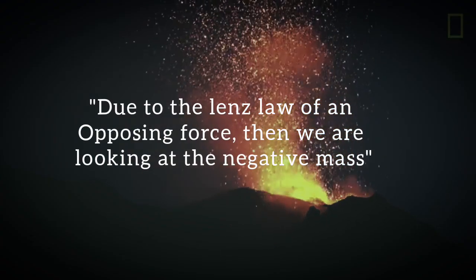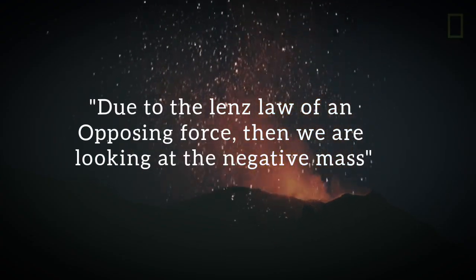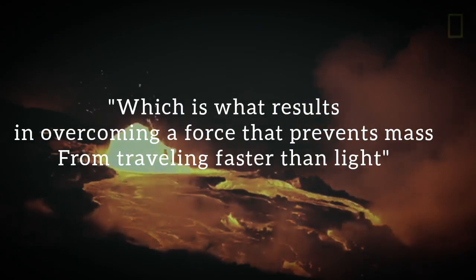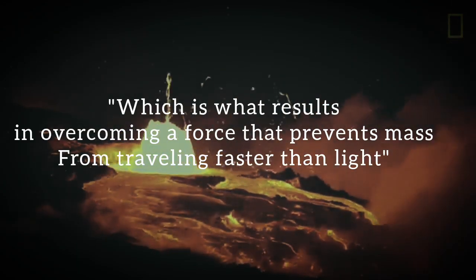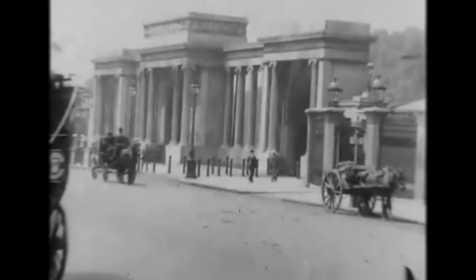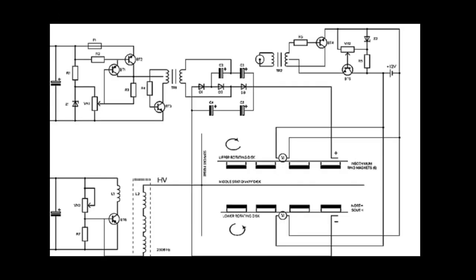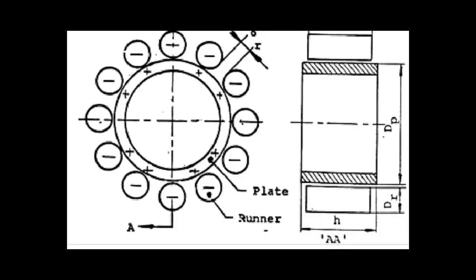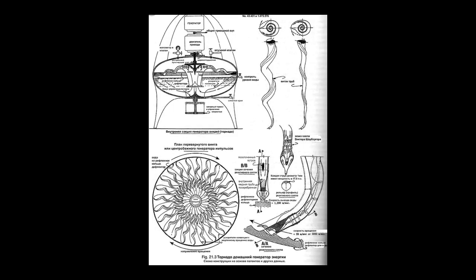Due to the Lenz's law of an opposing force, we're looking at negative mass, which is what results in overcoming a force that prevents mass from traveling faster than light. What you're looking at is the Alexis Gravifier, Graviticus platform, Sulfate Generator, and Schoenberg's device.